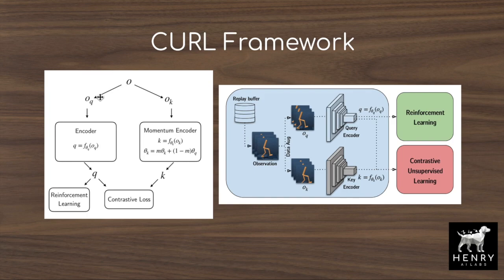Contrastive learning uses a loss function that makes the query as similar as possible to the positive keys and as dissimilar as possible to the negative keys. This is an auxiliary self-supervised learning loss that helps with the representation mapping from high-dimensional stacks of image frames into the low-dimensional representation that the RL agent uses for control, such as Soft Actor Critic or Deep Q-Learning.